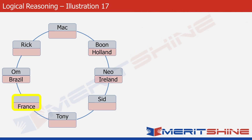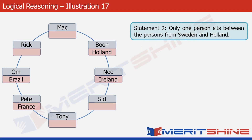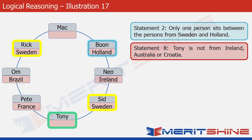The remaining empty box belongs to the person from France, and the only person not yet placed on the table is Pete, so Pete goes there. Statement 2 says only one person sits between the persons from Sweden and Holland. With Holland's position known, there are two possible positions for Sweden, highlighted in yellow. Statement 8 tells us Tony is not from Ireland, Australia, or Croatia. Since France, Brazil, Sweden, and Holland are already placed, the only remaining country for Tony is Egypt, so we place Egypt in Tony's box.